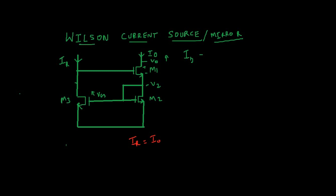Let's say for some reason VO increases, which is the drain of M1. This in turn causes the increase in IO. Now IO is not equal to IR but IO is greater than IR.